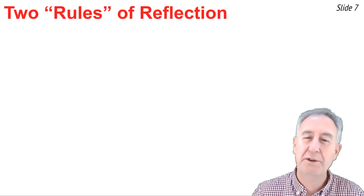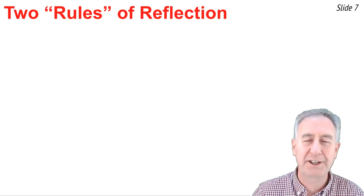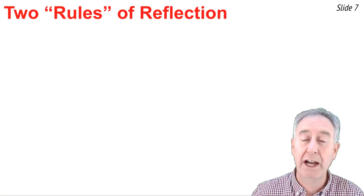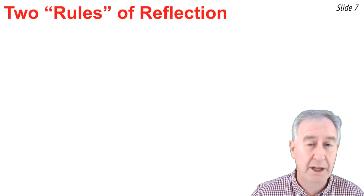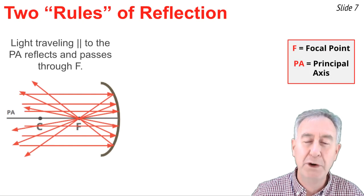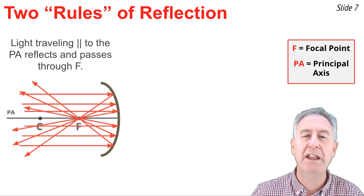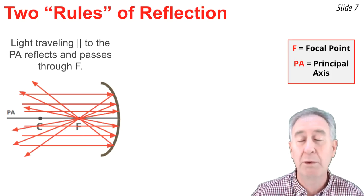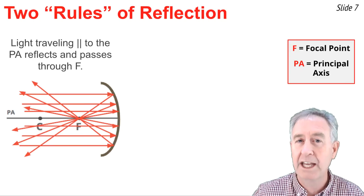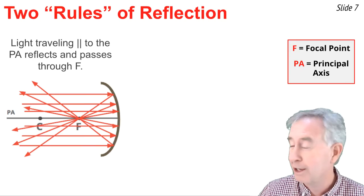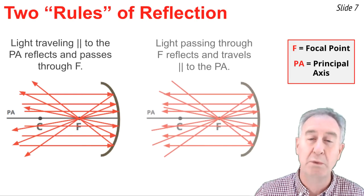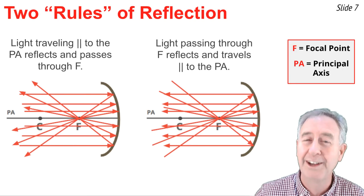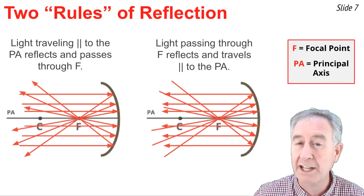When any ray of light strikes a curved mirror, it reflects according to the law of reflection. But there are two rules describing specific ray types worth remembering. The first rule: any ray of light traveling parallel to the principal axis on its way to the mirror will reflect and pass through the focal point. The second rule is almost the opposite: if a ray of light passes through the focal point on the way to the mirror, upon reflection it will travel parallel to the principal axis.